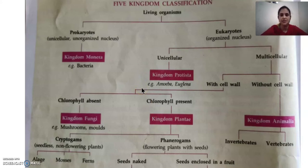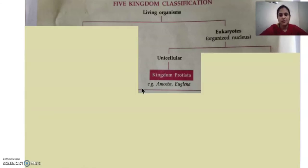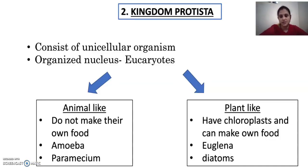Examples for kingdom Protista are amoeba and euglena. Today I will be telling you about kingdom Protista. Kingdom Protista consists of unicellular organisms, and it comes under the eukaryotes.